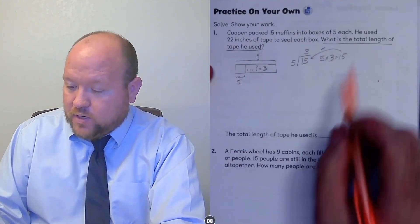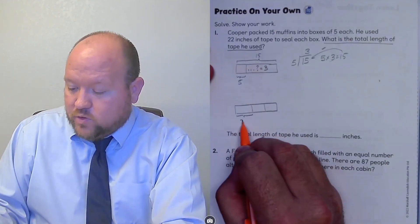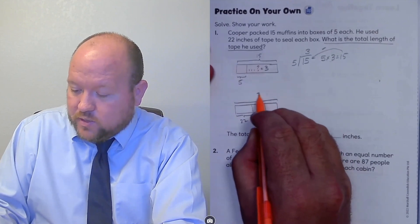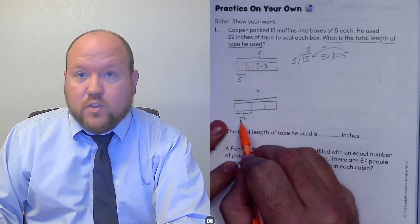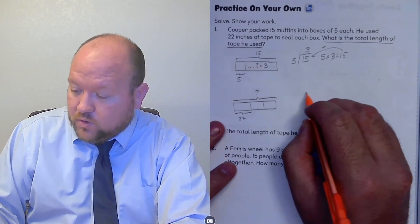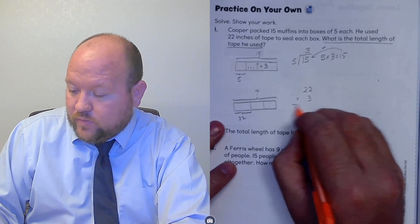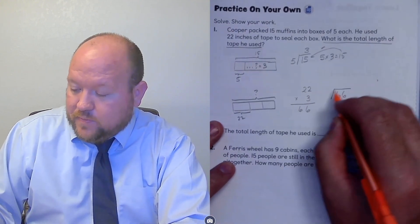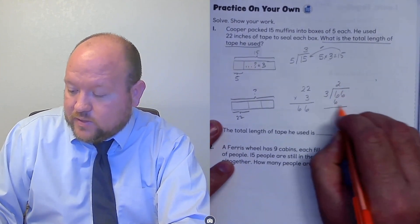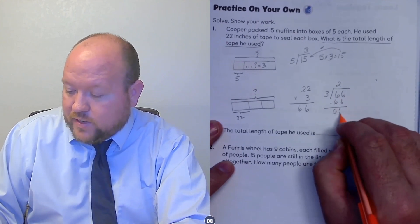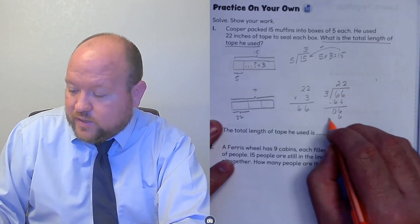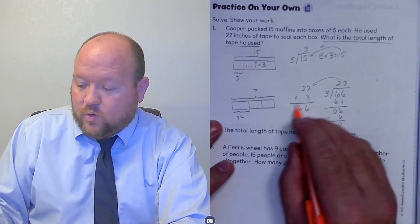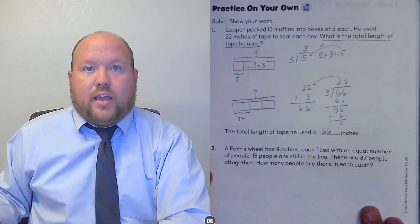Now he uses 22 inches of tape for each box. I'll use another part-whole model: I know there are three groups, 22 inches in each group, and I'm looking for the total — that's where my question mark goes. So we'll use multiplication: 22 times 3. Three times 2 is 6; three times 2 is 6 — so 66. Checking with long division: 3 goes into 6 two times, bring down the 6, 3 goes into 6 two times again — 22 matches. Therefore, 66 inches of tape was used.